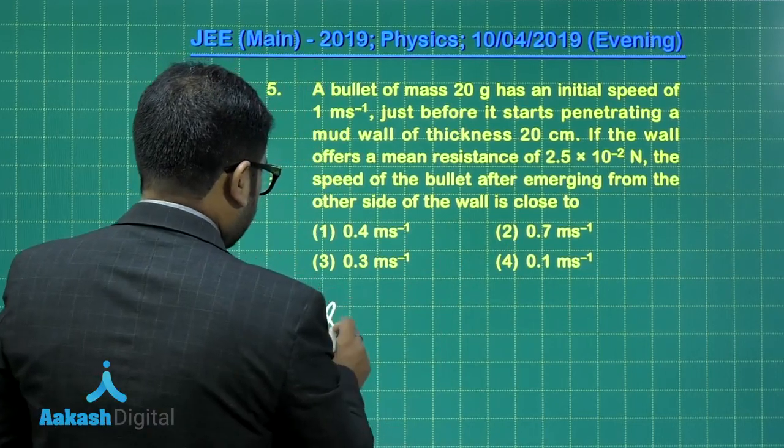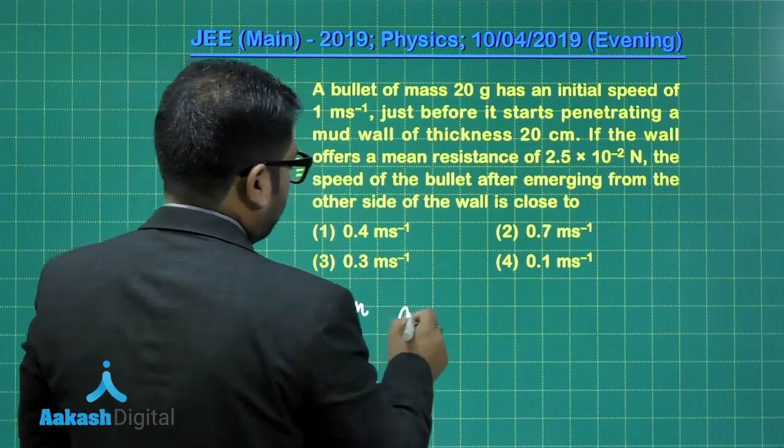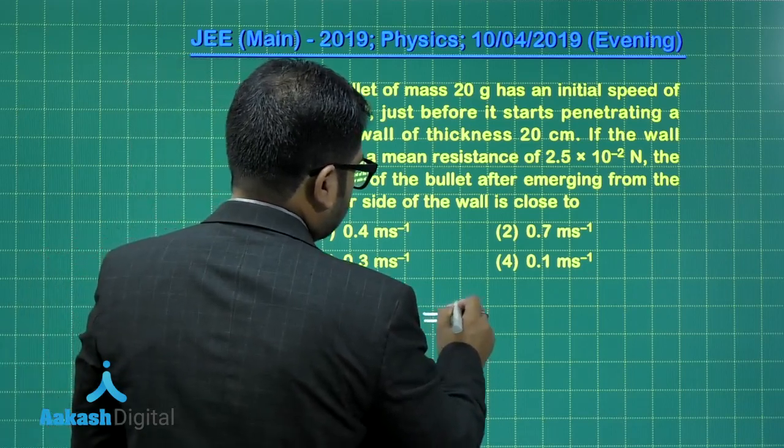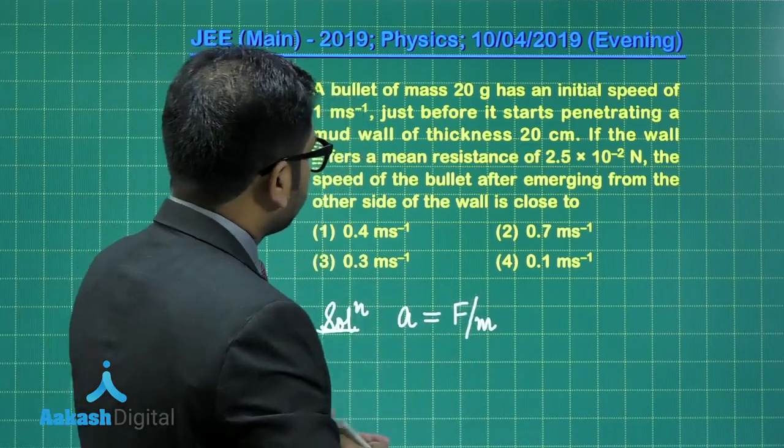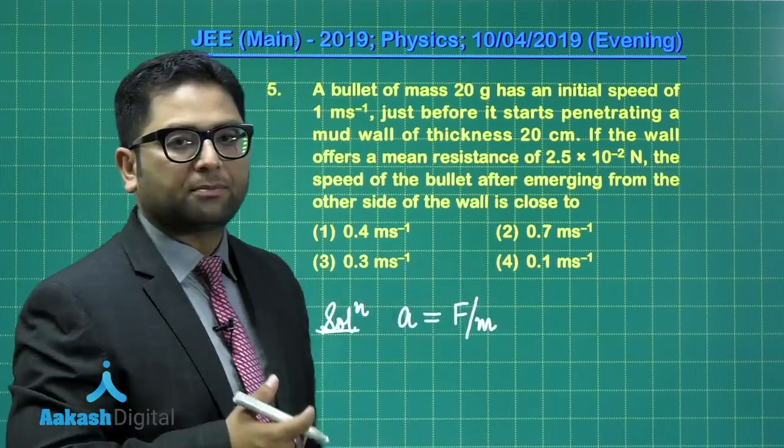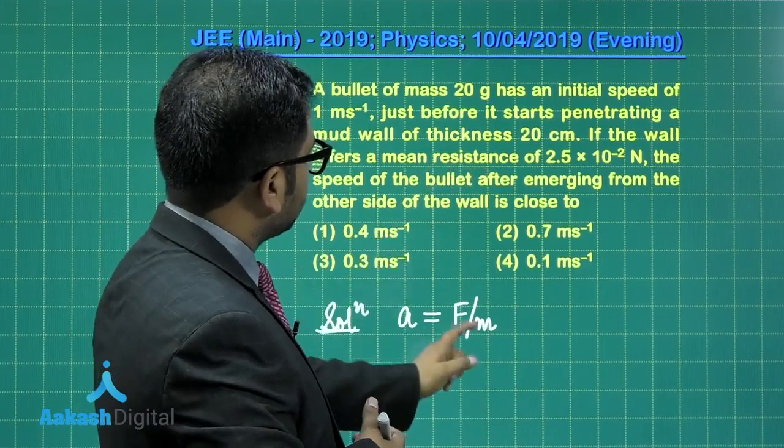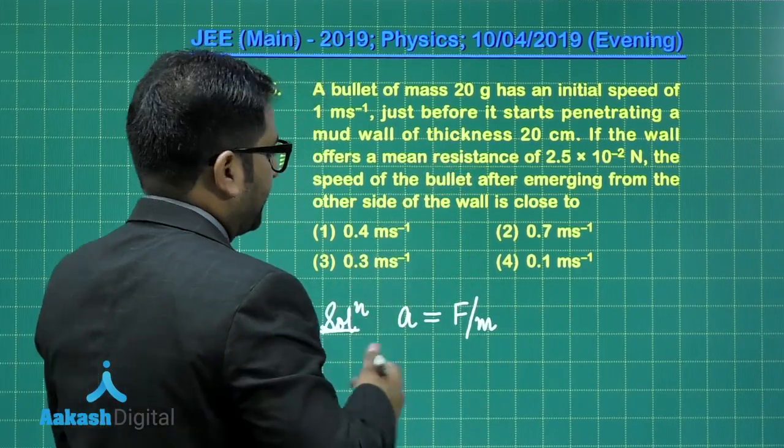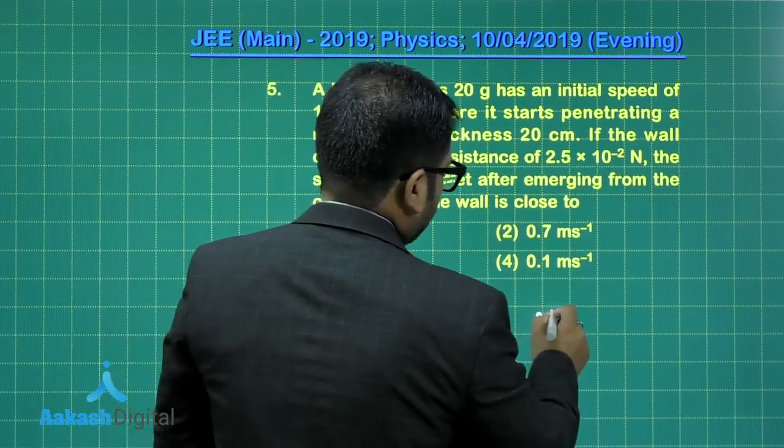The solution part would be something like this: the retardation offered by the mud wall, that's acceleration equals f by m, and that is certainly going to be retardation because that would be in the opposite direction. The force is there, the mass is there.